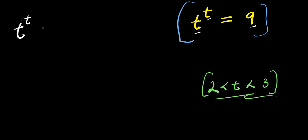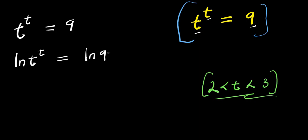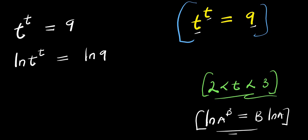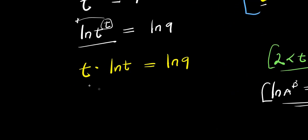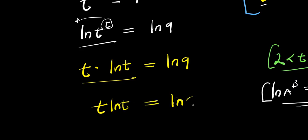We have t to the power of t equals 9. We take the natural log of t to the power of t, and this equals the natural log of 9. If you have the natural log of a to the power of b, this equals b times the natural log of a. We apply this property here so the t will come down in front, and we have t times natural log of t equals natural log of 9.